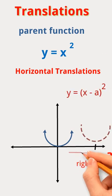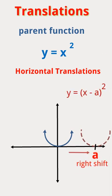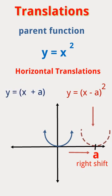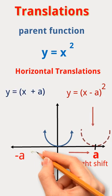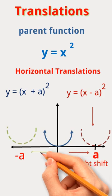When the equation is given by y equals (x plus a) squared, there will be a shift in the parent graph towards the left by a units.